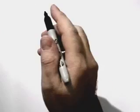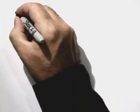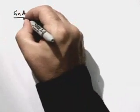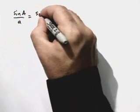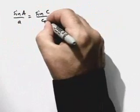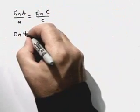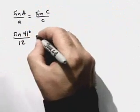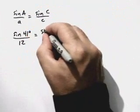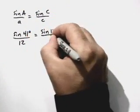We'll use the law of sines again to find the length of side C. The sine of angle A over A is equal to the sine of angle C over C. The sine of 41 degrees over 12 is equal to the sine of 117 degrees over C.